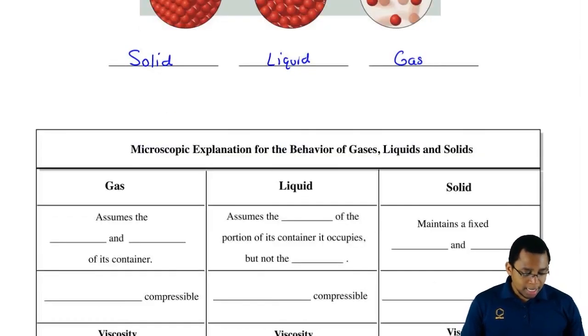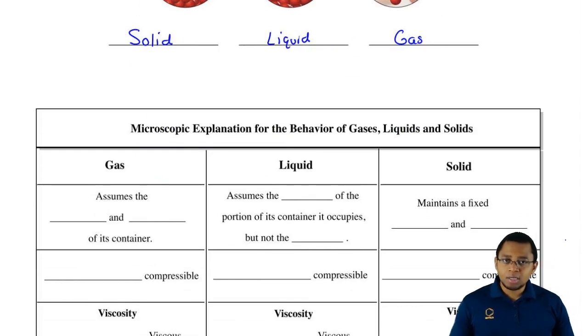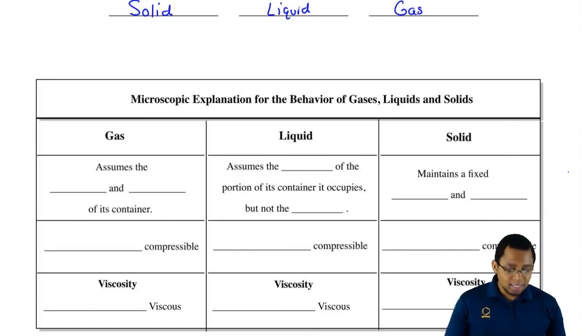From this, we can take a microscopic explanation to see what each of these different states of matter have in common and what they have different from one another. We're going to say that for the gases, the gases remember they assume the shape and volume of their containers.